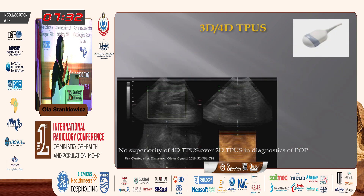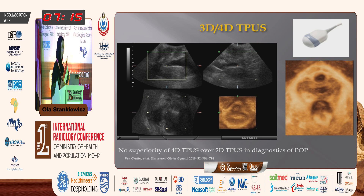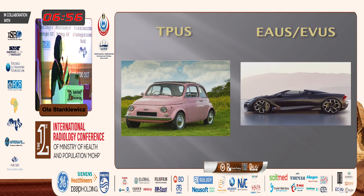There is also the newer and quite spectacular-looking 3D and 4D transperineal ultrasound, using exactly the same probe as baby scans, placed on the perineum. It produces nice pictures of the muscles and prolapsing organs. However, there is no superiority of 4D TPUS over standard TPUS in the diagnostics of pelvic organ prolapse — so it produces nice pictures, but is not really superior for diagnostic purposes.